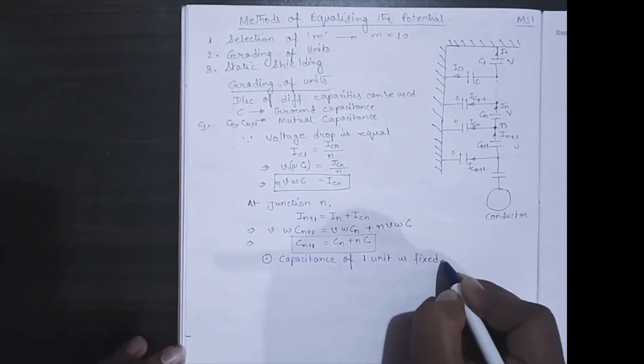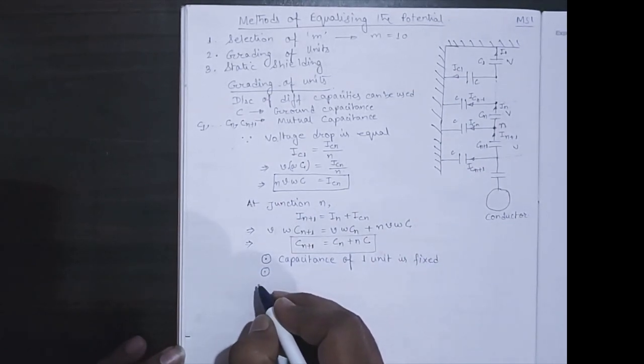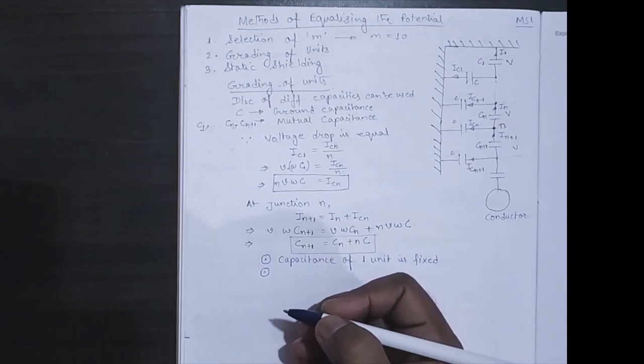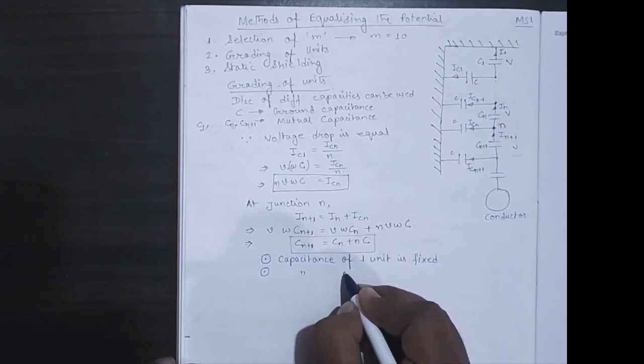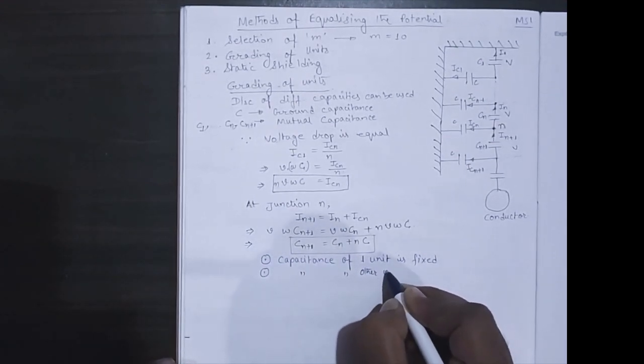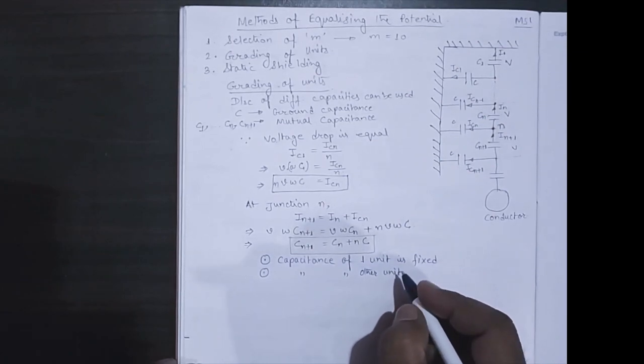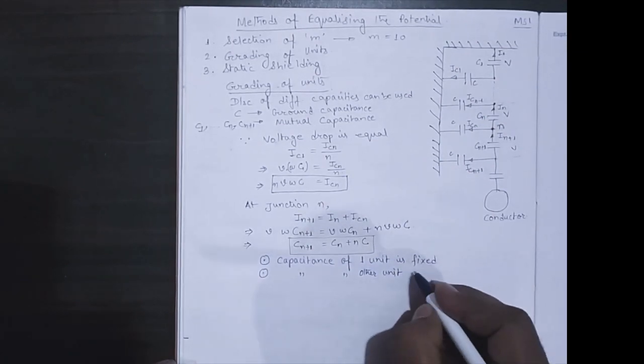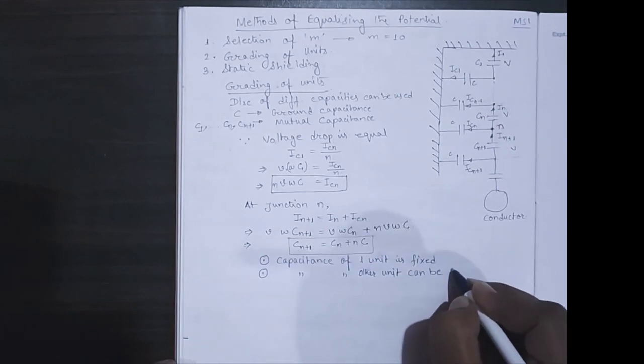That is, capacitance of one unit is fixed, that is the ground capacitance, and capacitance of the other unit can be found by equal distribution of voltage.